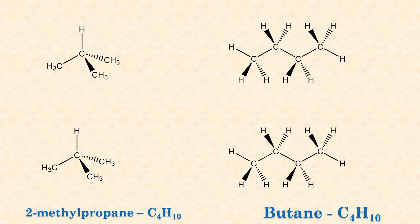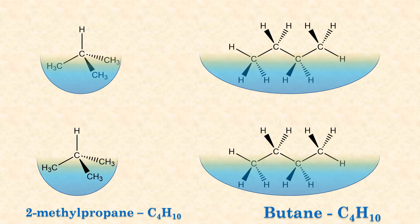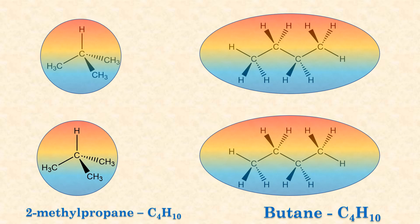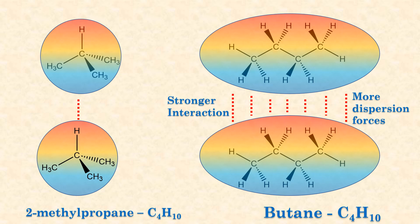2-methylpropane is branched — all carbon atoms are not joined in one single line. Both are nonpolar, but imagine a temporary dipole. Again, because of butane's larger surface area, it will have more dispersion forces, thus stronger interactions.